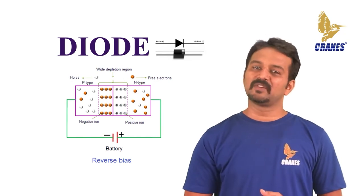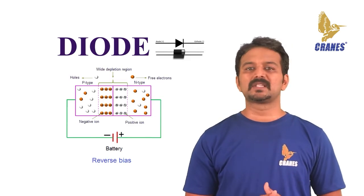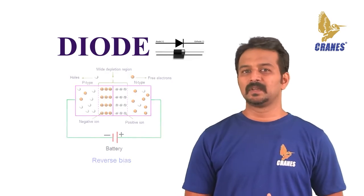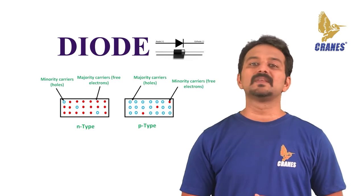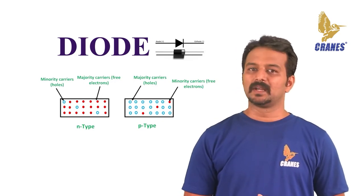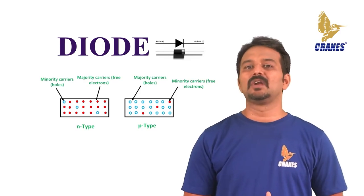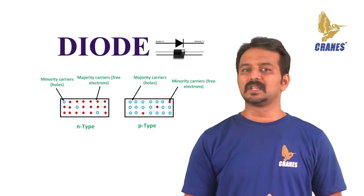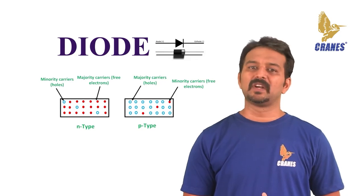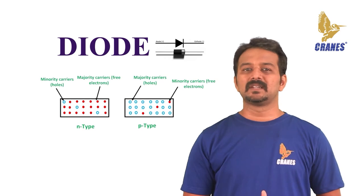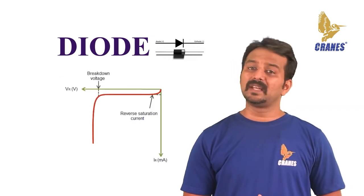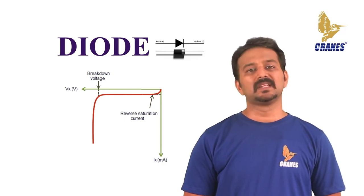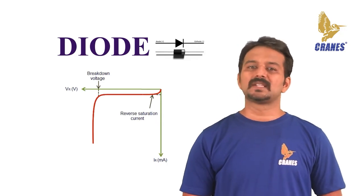This condition of a diode is called the reverse bias condition. In this state, there are no majority charge carriers across the junction as they move away from it, so the diode blocks the flow of current. However, there are always some free electrons in the p-type and some holes in the n-type — these are called minority charge carriers. In reverse bias, these minority carriers easily cross the depletion region since the field helps rather than hinders them. As a result, a tiny current flows through the diode, called the reverse saturation current, and its amplitude is very small due to the low number of minority carriers.